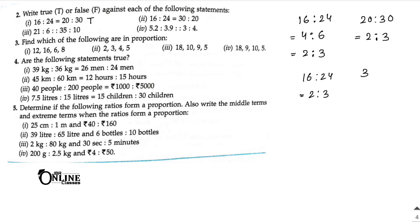Next one: 16 is to 24 equals 2 is to 3. But 30 is to 20 equals 3 is to 2. These are not equal, so it's false.